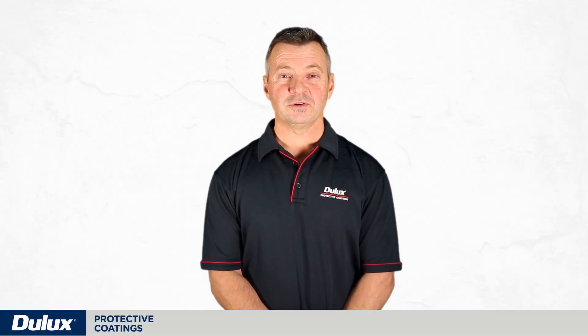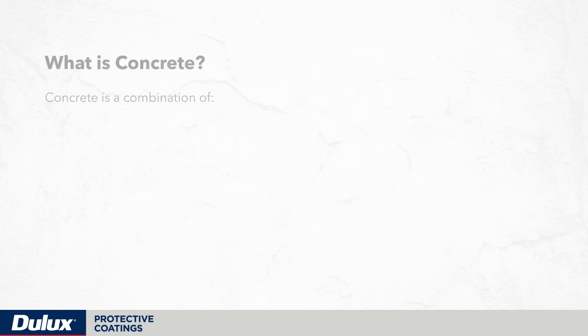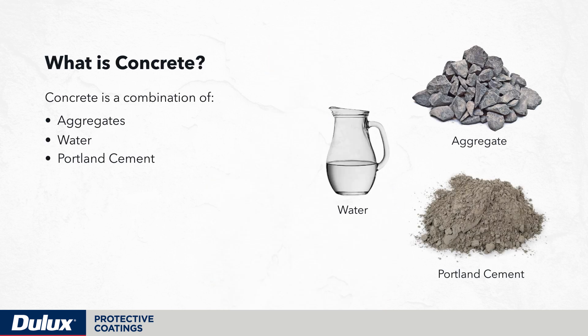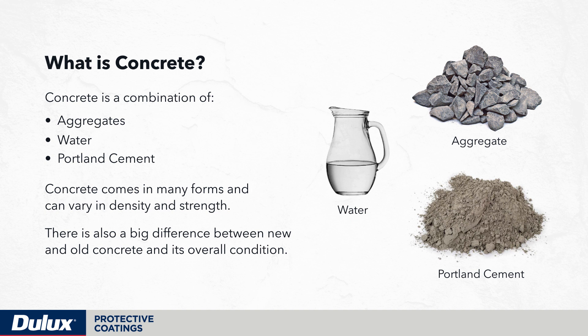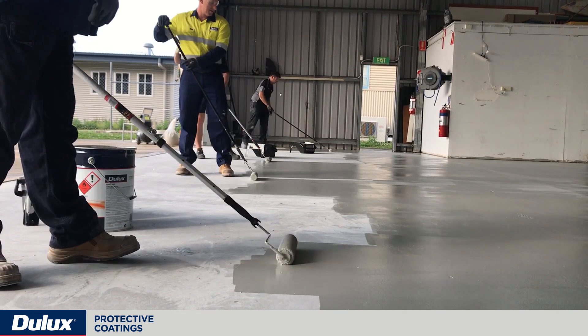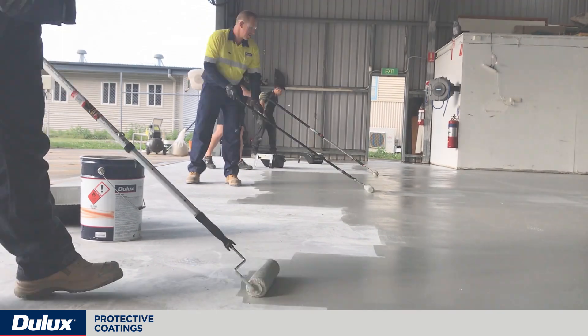In this video we're going to be looking at concrete substrates. Concrete is a combination of aggregates, water and portland cement. Concrete comes in many forms and can vary in density and strength. There is also a big difference between new and old concrete and its overall condition. Many variables exist with concrete and it's one of the most difficult substrates to evaluate and successfully apply a coating to.